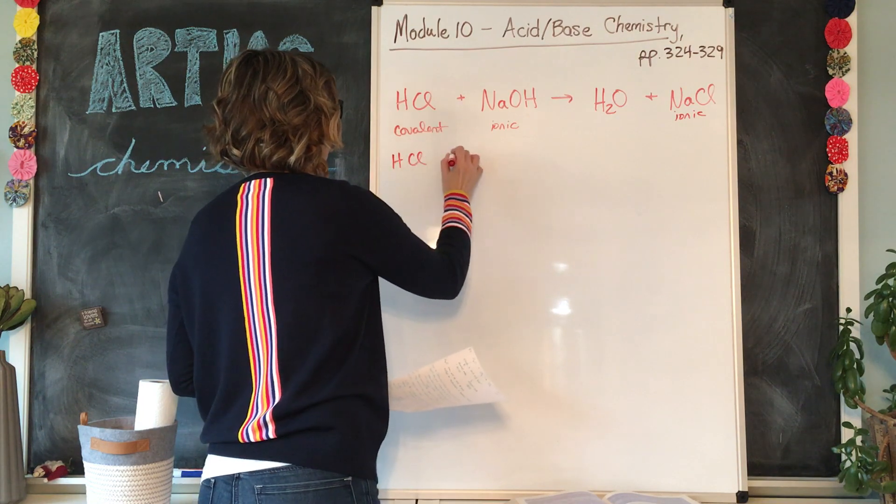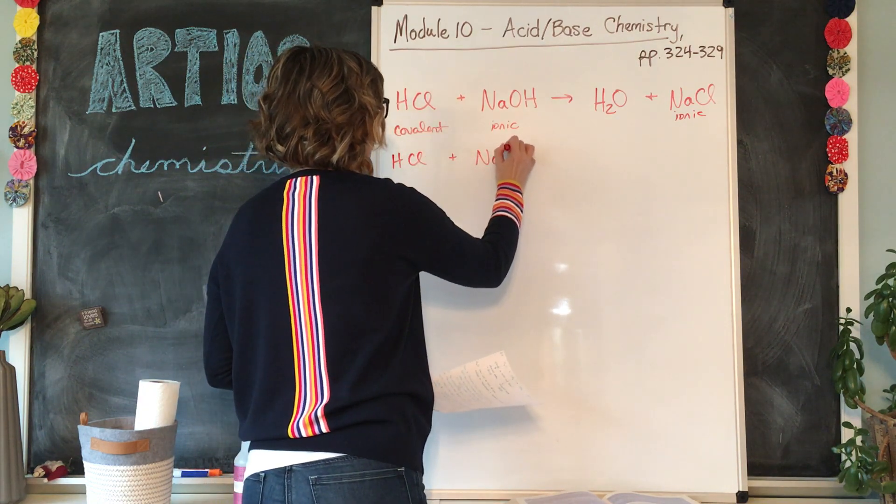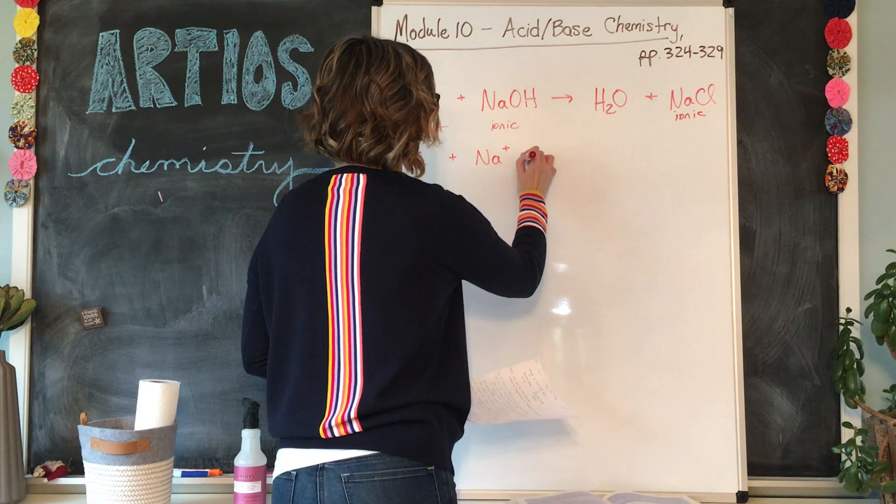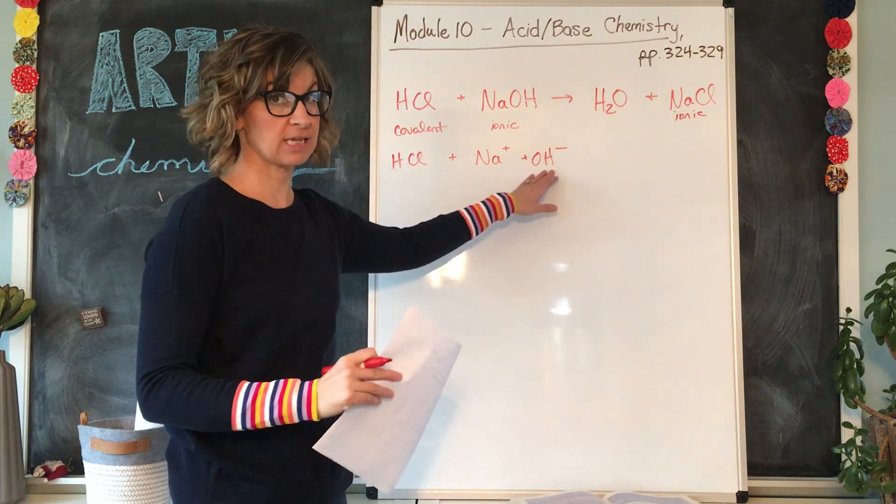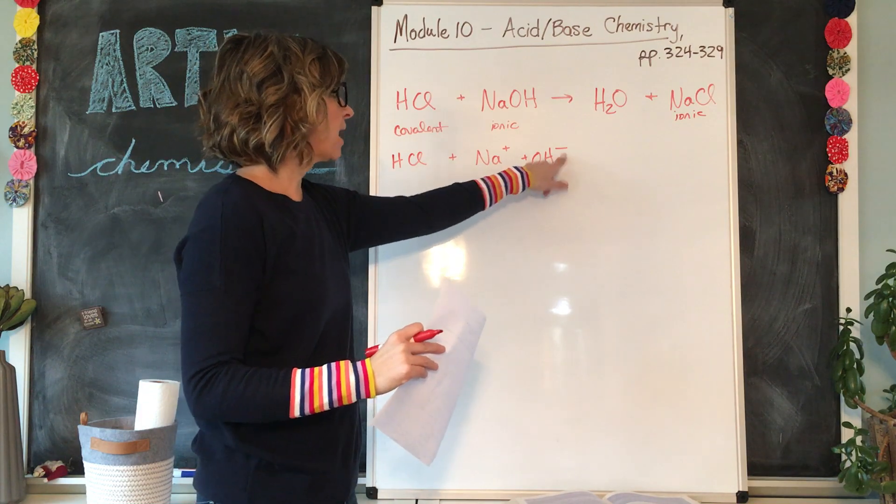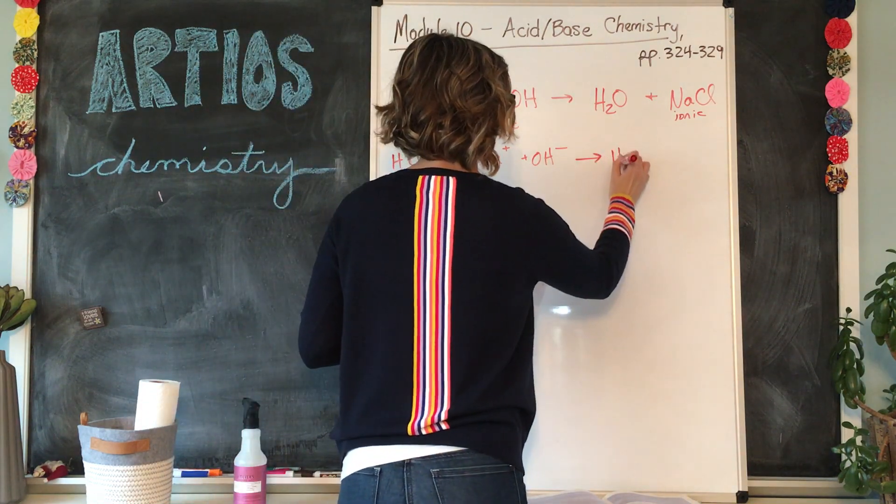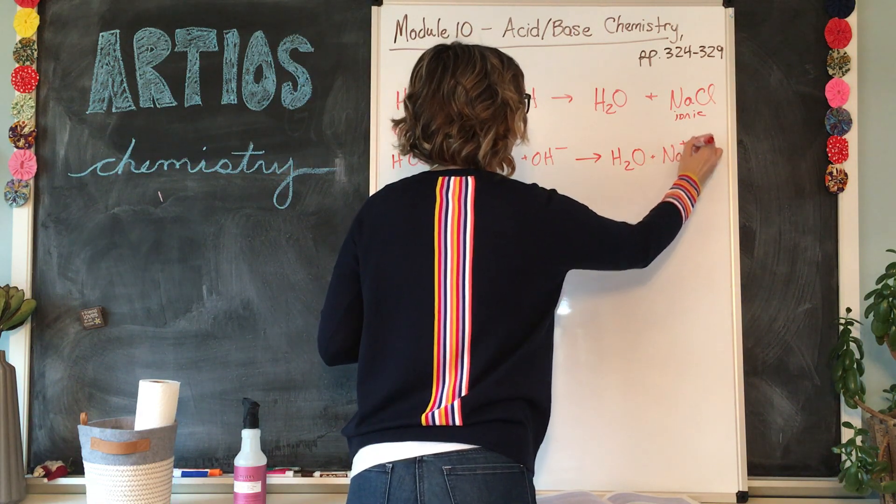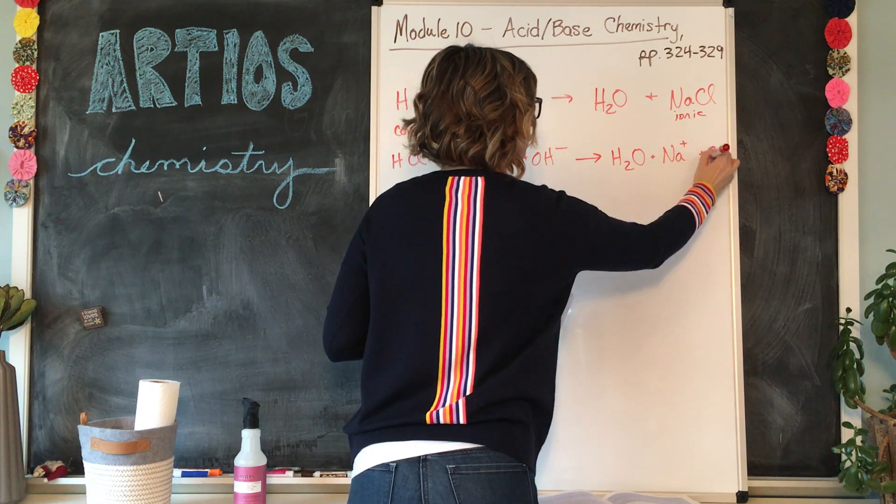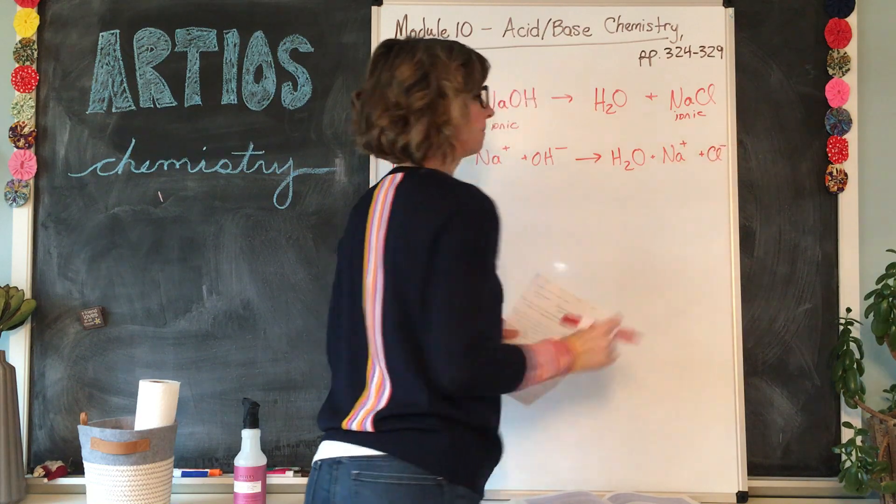So we're going to split those into its ions as well. So let's rewrite it. So we've got HCl plus Na as a 1+ charge, plus OH-, because I know the hydroxide ion has a 1- charge, yields H2O plus Na+ plus Cl-.